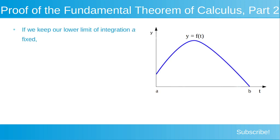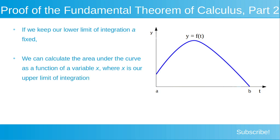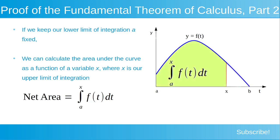If we keep our lower limit of integration, a, fixed, we can calculate the area under the curve as a function of a variable x, where t equal to x is our upper limit of integration. So we can calculate our net area as being equal to the integral from a to x of f dt. If we look at our plot on the right-hand side of the screen, we see that represented there, with the net area shaded in green equal to the integral from a to x of f dt.